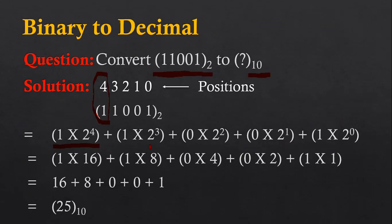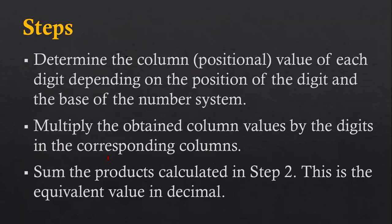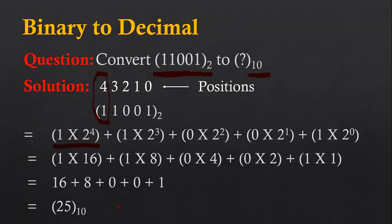Now, moving to the third step: sum the products calculated in step two, and this will be the equivalent value in decimal. So we have to add all these results. The addition gives us 16 plus 8 plus 0 plus 0 plus 1.